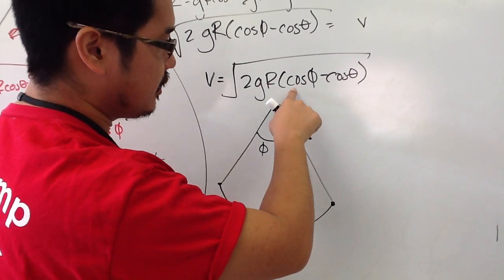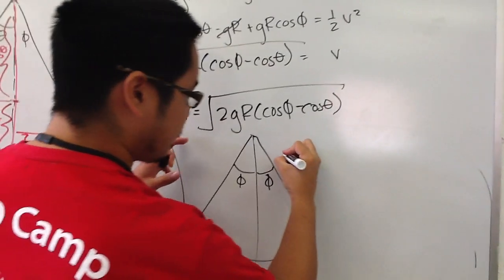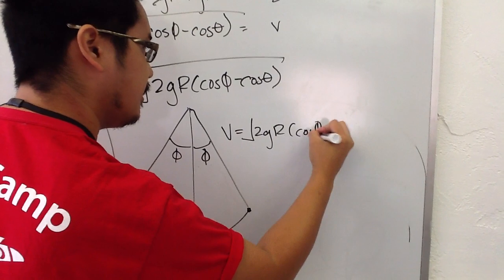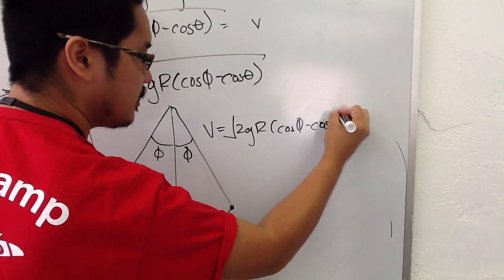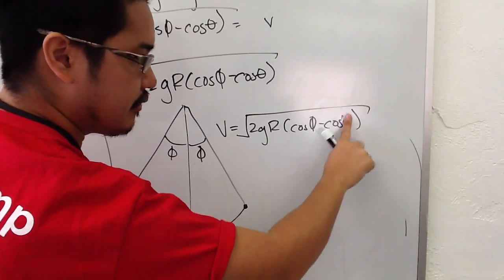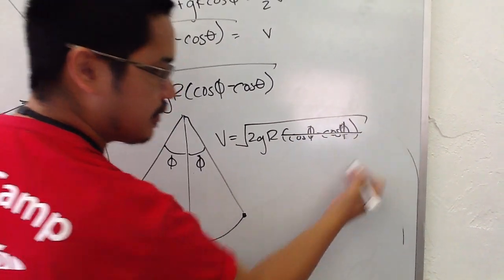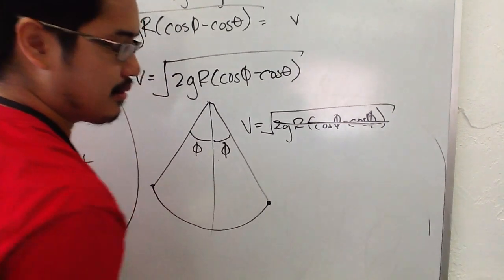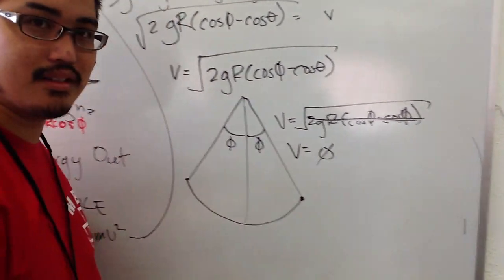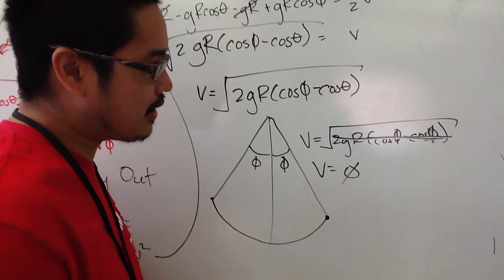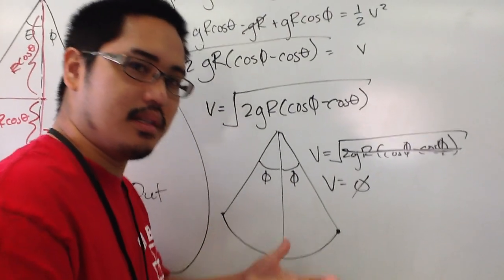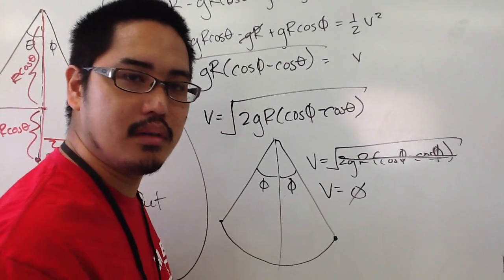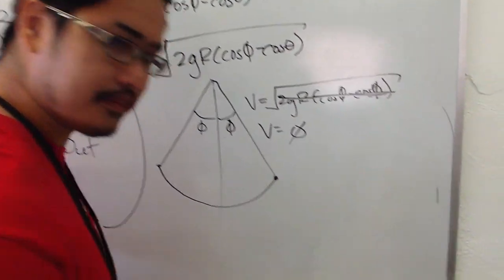So if theta were equal to phi, your velocity should be equal to zero. Well, check this out. If I take this and figure out this equation, 2gr cosine phi minus cosine theta. If I change this to a phi, this becomes zero. So zero times all of that, and you have a zero. The square root of zero is zero, so it would be equal to zero. That was just my way of checking to see if this equation was somewhat of a viable equation. We cool? Yeah. All right. Thanks. Thank you. Thank you.